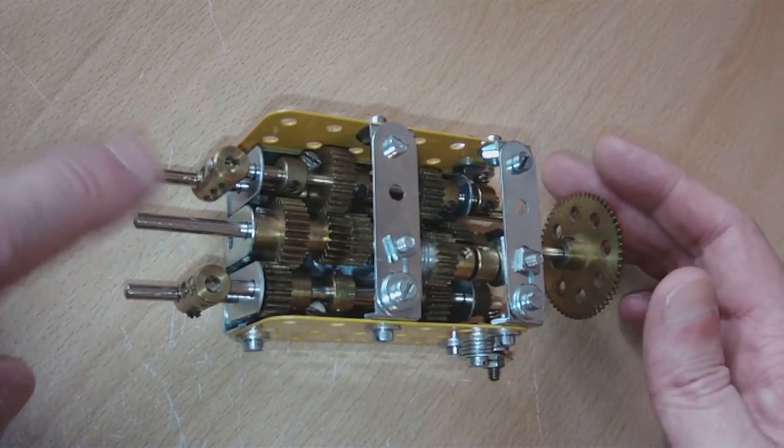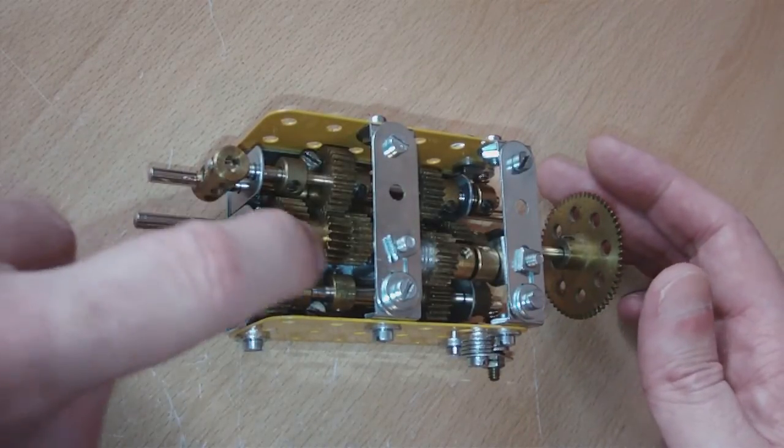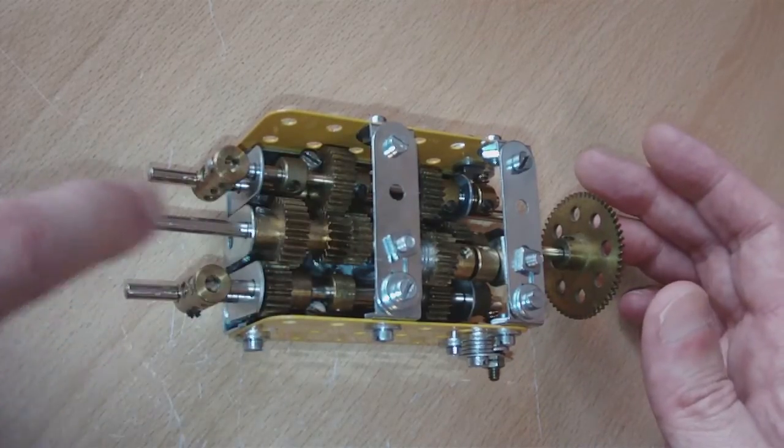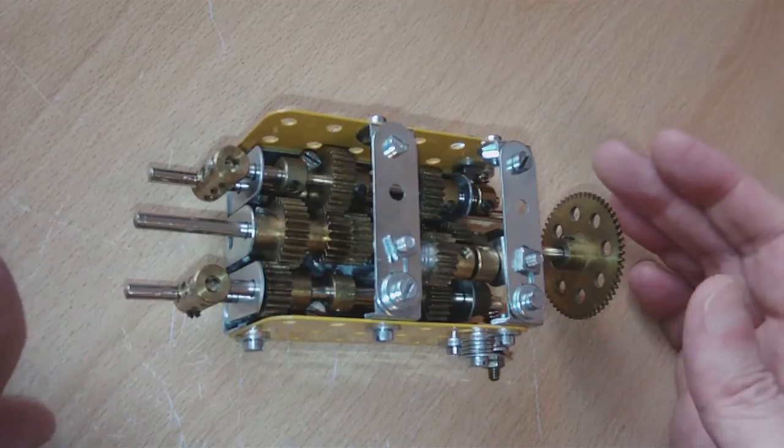This might look like one shaft in the middle, but the shaft on the input actually ends halfway through this gear here. And that's the output. That's why it can work independently.